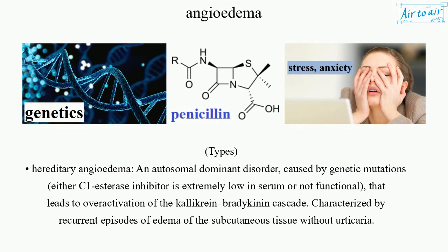Types. Hereditary angioedema: an autosomal dominant disorder caused by genetic mutations, either C1-esterase inhibitor is extremely low in serum or not functional, that leads to overactivation of the kallikrein bradykinin cascade, characterized by recurrent episodes of edema of the subcutaneous tissue without urticaria.